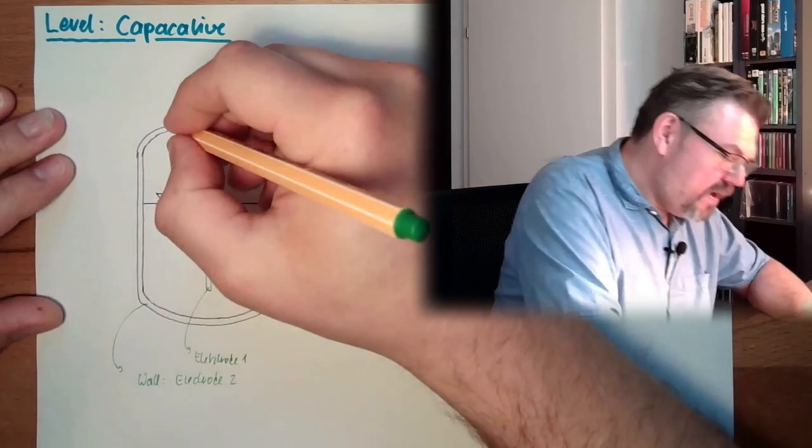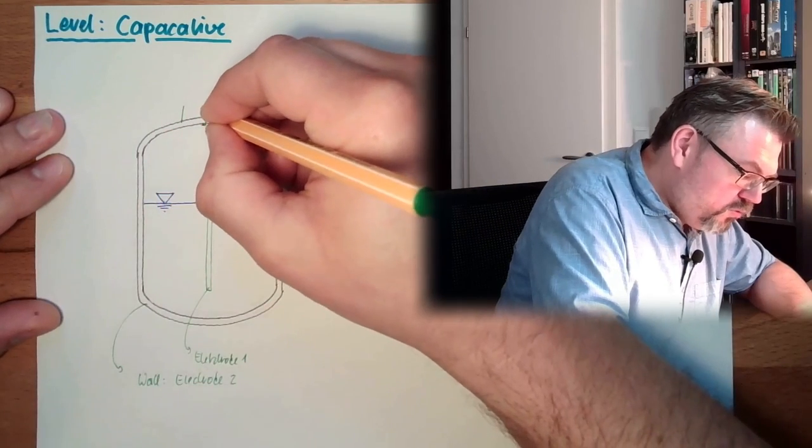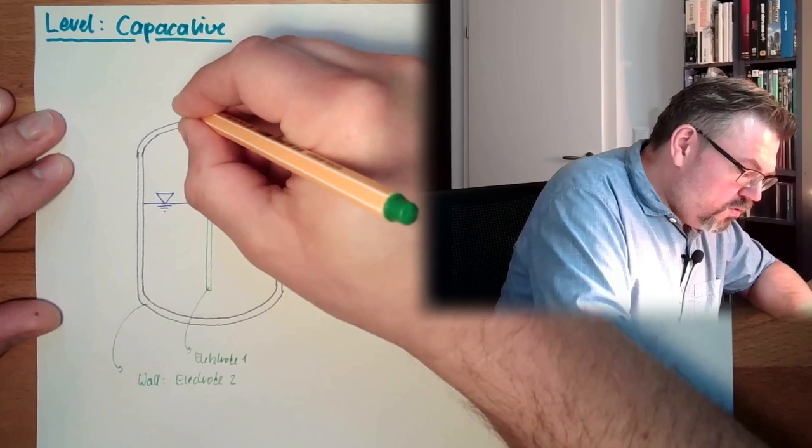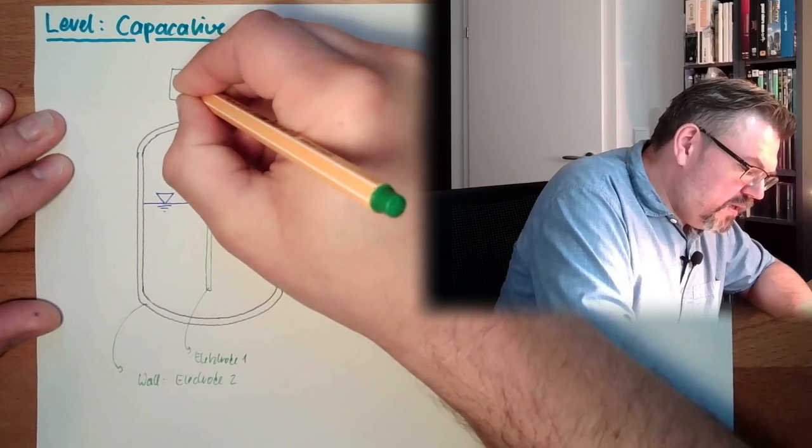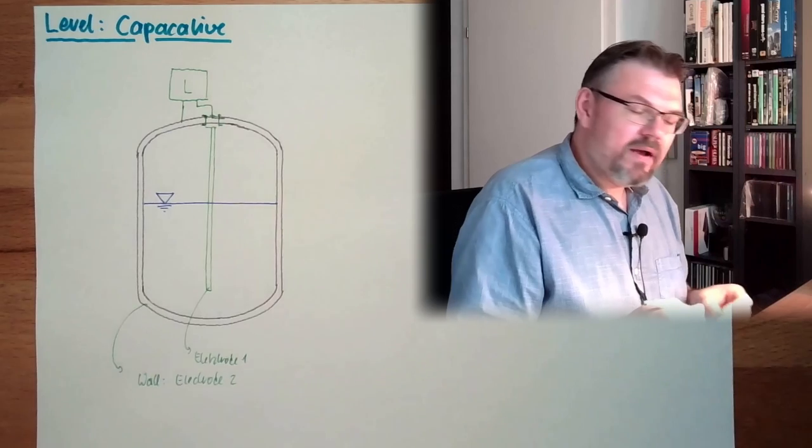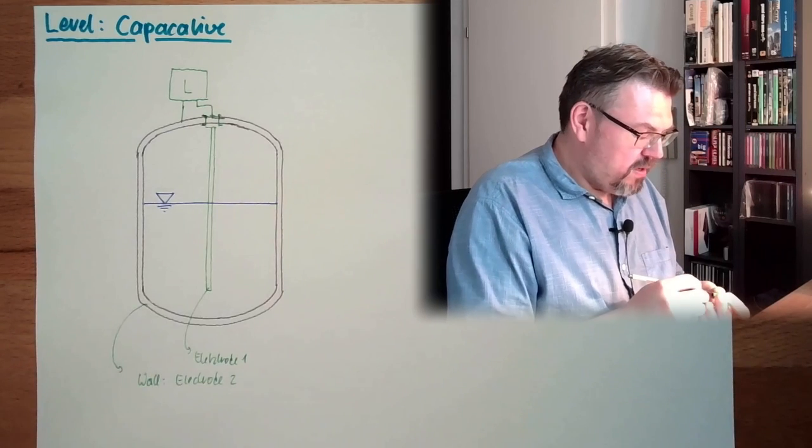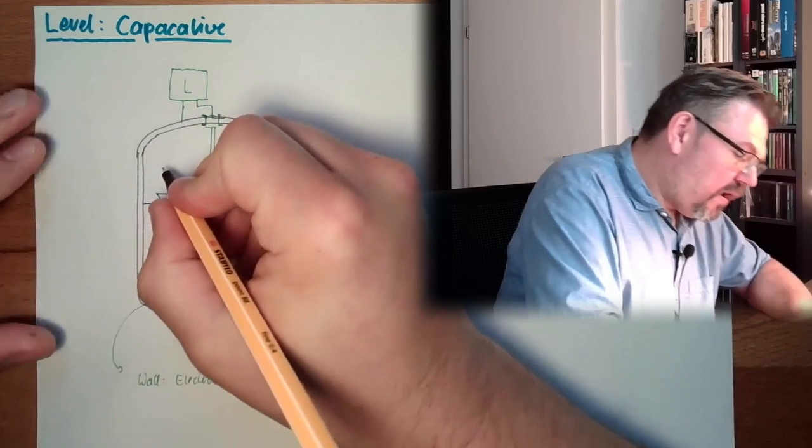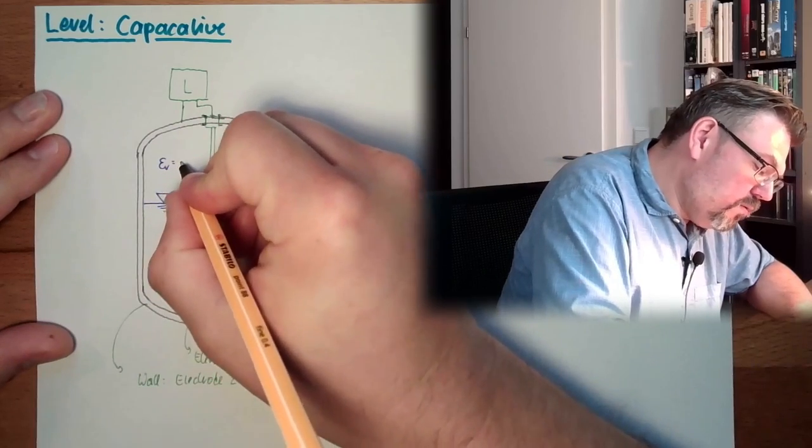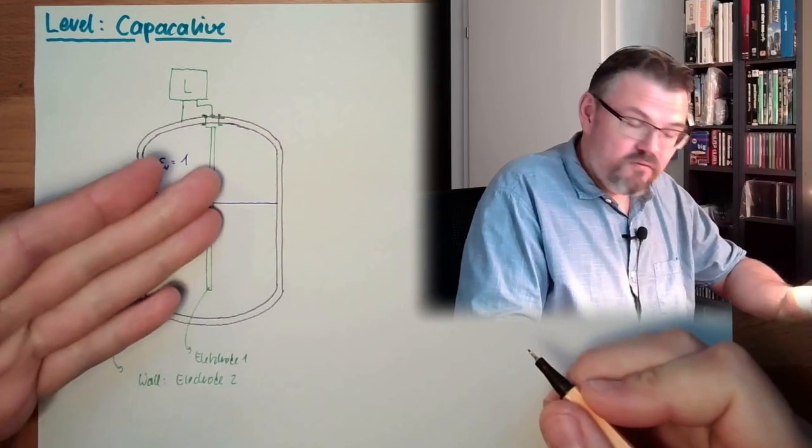That's one possibility. And we connect those two electrodes to the transducer. And this will indicate the level. Why is this indicating the level? Because here we usually have an epsilon r equals one. So this is air, for instance.